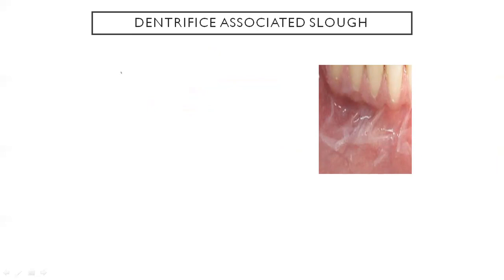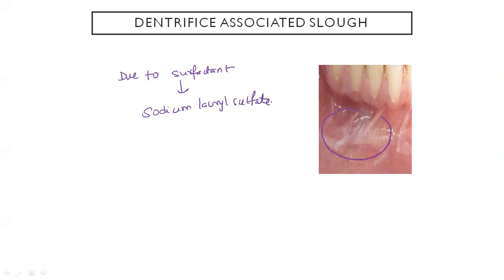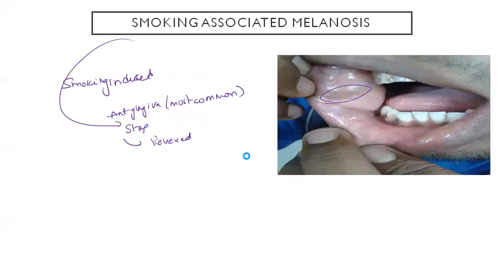Next we have dentifrice-associated slough. This occurs due to surfactants used in some toothpastes, mainly sodium lauryl sulfate. A white slough can be seen on the mucosa. Patients can be advised to use toothpaste that does not contain this surfactant to avoid the condition.